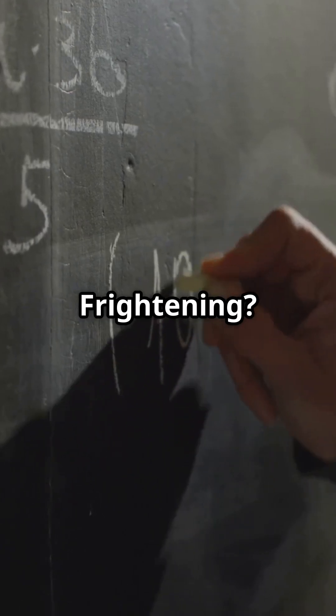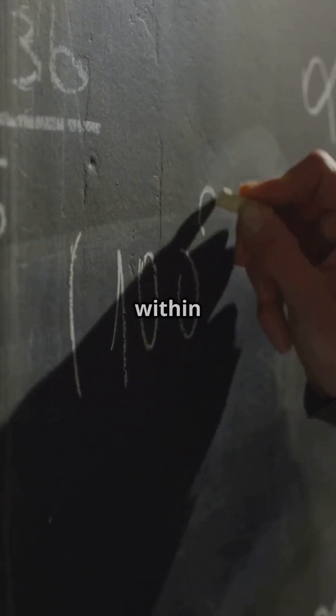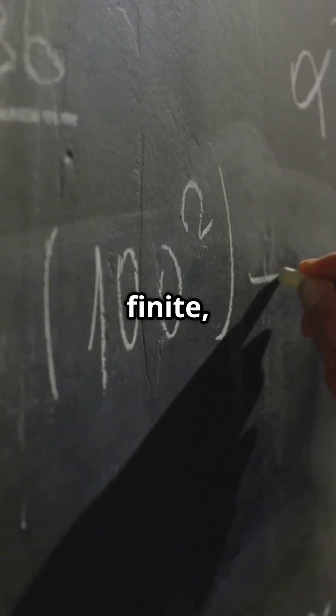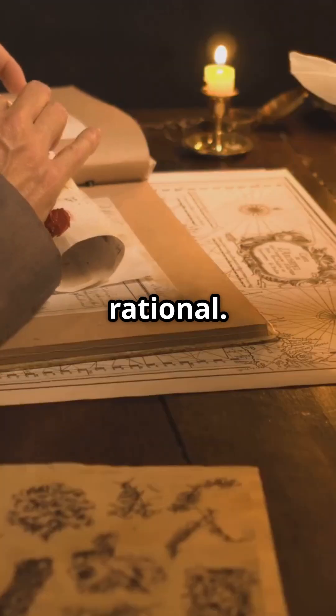Why was it so frightening? Because √2 represented chaos within order, infinity within the finite, irrationality inside a system meant to be completely rational.